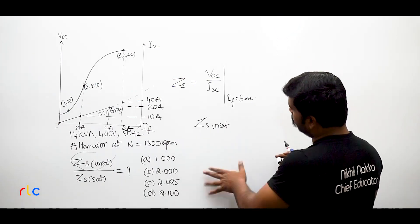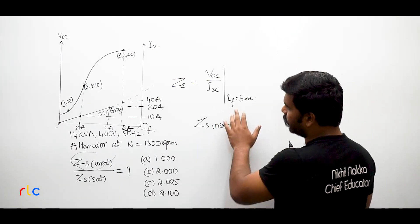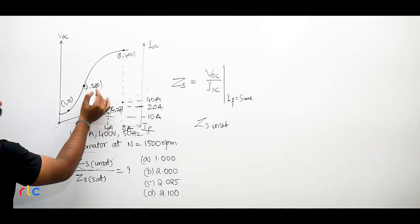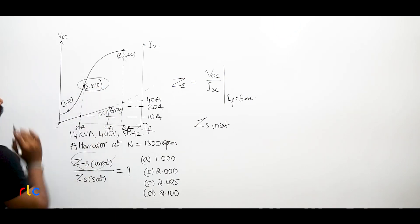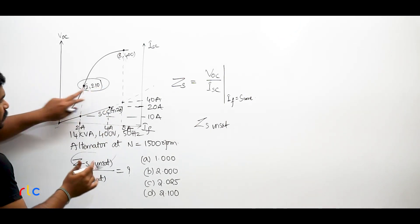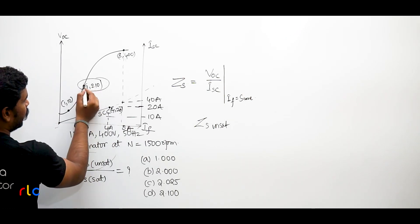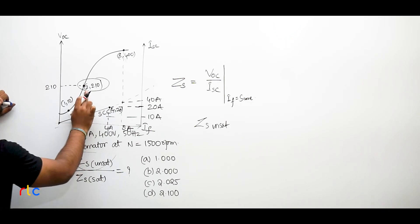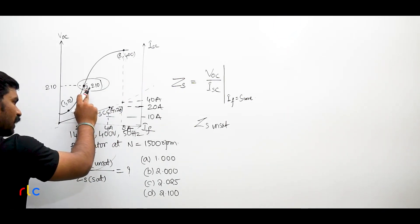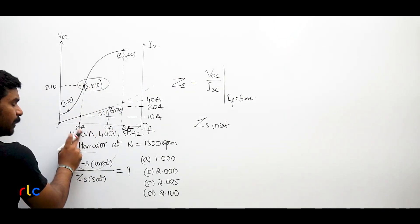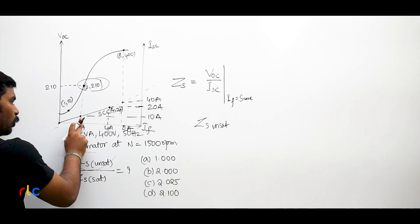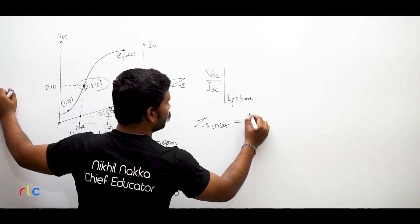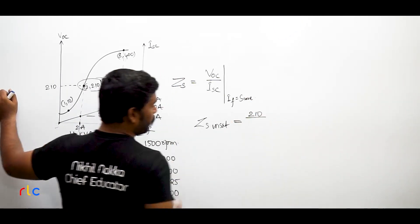So Zs unsaturated means I have to take the field current where the core is not saturated. So he has posted directly, he has given some set of field current values here. I am going to consider this one: 2, 2, 10, that means this is from the OCC test. Here 2 Amps is the field current and VOC is how much? 210 V when the field current is 2 Amperes in OCC test, OC test. Now, similarly if SC test is conducted at same 2 Amperes of field current, what would have been the ISC? 10 Amperes.